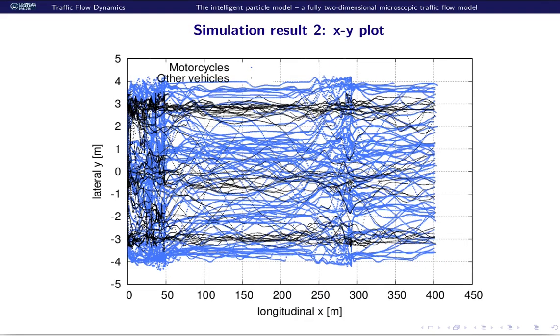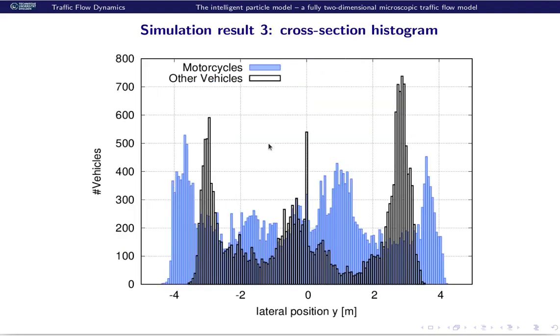How to simulate that? I just added the floor field only for the other vehicles, the black ones, while the motorcycles just ignore the floor field. There is some space where the motorcycles can squeeze in between. If you look at a histogram, you see that the motorcycles use just the space in between, and we have four gaps between the lanes and also between the lane and the road boundaries.